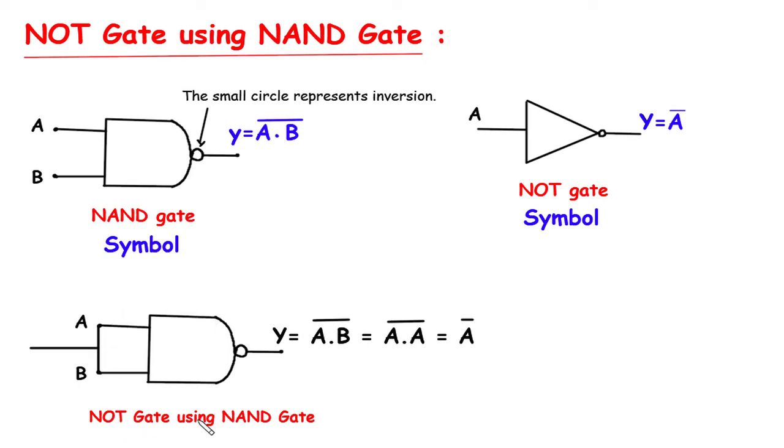This is how we can make NOT gate using NAND gate. If we short input A and B and consider it as one input, then the output will be Y equals A dot B whole bar, and it is equivalent to A dot A whole bar, and it equals A bar, which is same as NOT gate output, Y equals A bar.